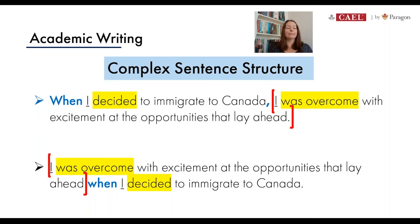In the top, because we started with the dependent piece and the conjunction, we have a comma. In the bottom, we started with the independent or strong part of the sentence, so no comma is needed. I hope you're now more comfortable working with the two types of clauses — independent and dependent — and that you can practice creating your own compound and complex sentence structures. Next week we're going to start looking at paragraph structure, so join me then. Take care and we'll see you soon!